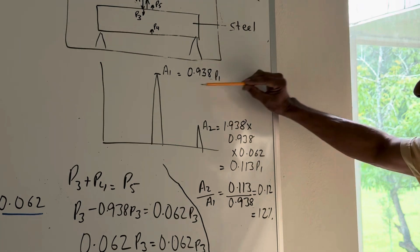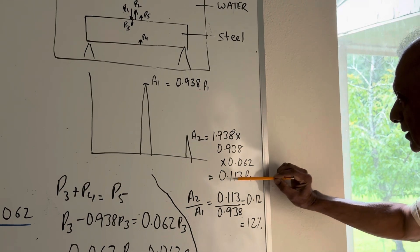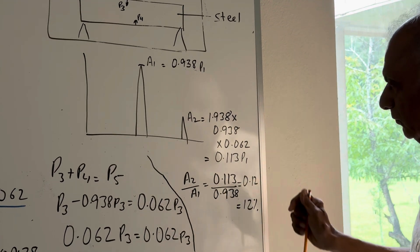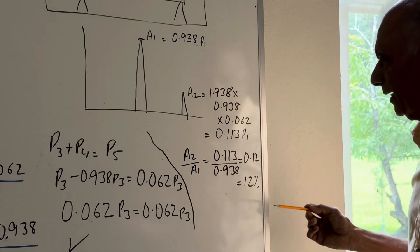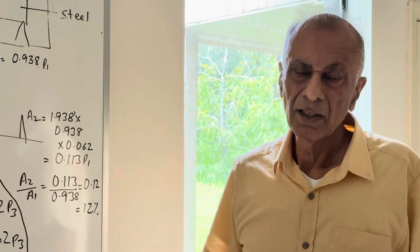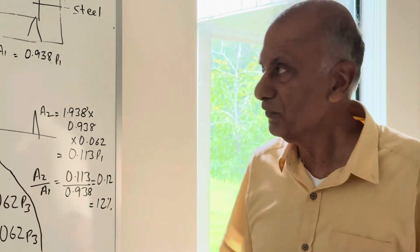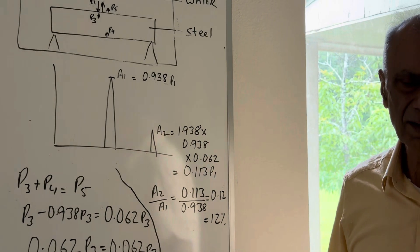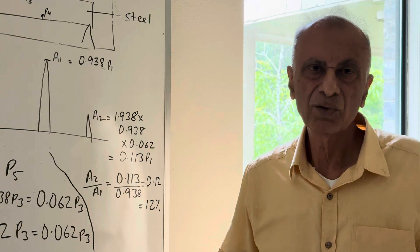A2 equals 1.938 times minus 0.938 times 0.062, which comes out to 0.113 P1. So A1 is 0.938 P1 and A2 is 0.113 P1. Dividing A2 over A1 gives approximately 0.12, meaning the back-wall signal A2 is 12% of the front-wall signal A1.